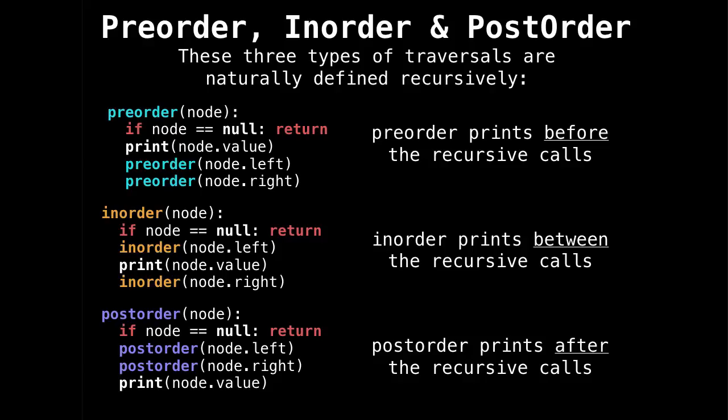Preorder prints before the two recursive calls. Inorder will print between recursive calls, and postorder will print after the recursive calls. So if you look at the three functions on the left, the only thing that's different between them is where the print statement is.